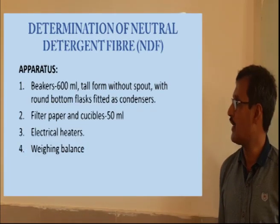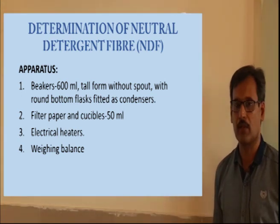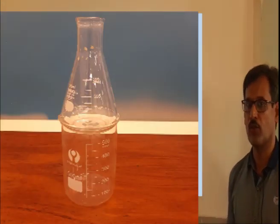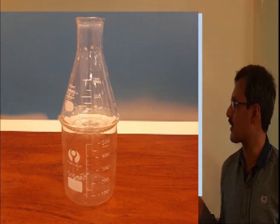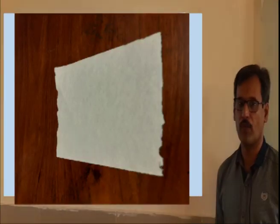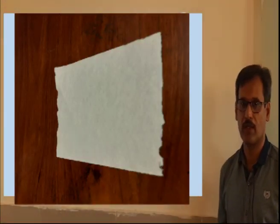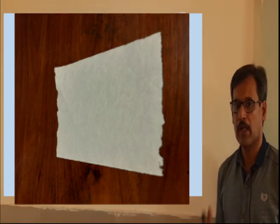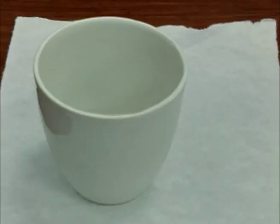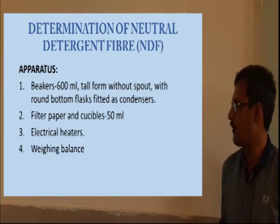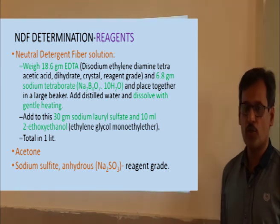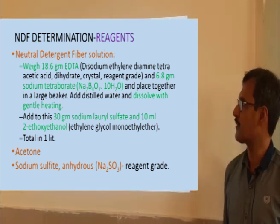For the determination we need a 600 ml beaker without a spout, and a round-bottom flask that will be used as a condenser. We need filter paper for filtration along with a filtration assembly, suction pump, and crucible for drying the filtrate. We also need an electric heater and oven for the determination of NDF.